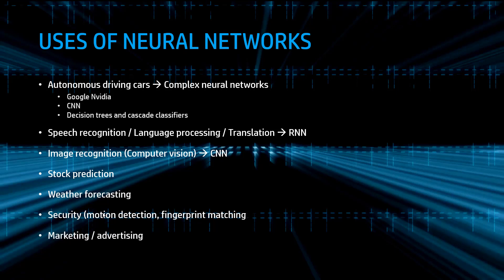So what uses do neural networks have? Neural networks are being used in many companies. For example, Google is researching artificial intelligence extensively. They're making speech recognition, for example with the translator, language processing, and translation. All of these recognitions mostly use recurrent neural networks nowadays. Then image recognition uses computer vision and convolutional neural networks.